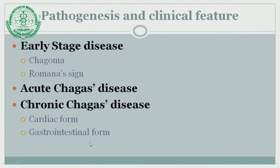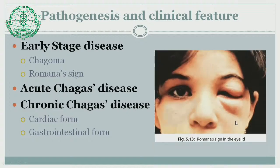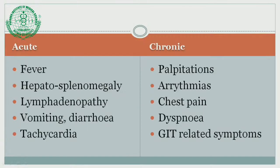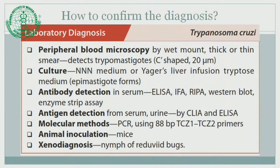The pathogenesis and clinical features of Chagas disease: the early stage consists of chagoma and Romana's sign — unilateral swelling of the eyelids due to the presence of the parasite at that inflamed site. Then acute Chagas disease and chronic Chagas disease develop. In chronic Chagas disease there is involvement of cardiac complications and gastrointestinal complications. Various systems become involved in the chronic form — gastrointestinal and cardiovascular systems.